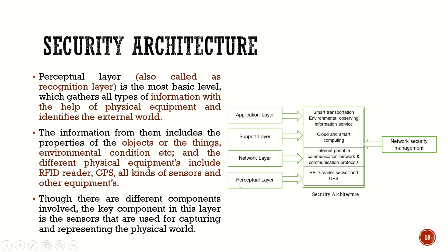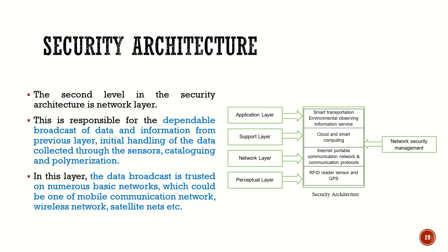The second layer is the network layer, which is equally important. It is directly connected to the broadcast of data collected in the perceptual layer, where sensors get the data, and those data have to be sent to the next layer. In this network layer, the data broadcast is trusted on numerous basic networks — mobile communication networks, wireless networks, satellite networks, Wi-Fi, and so on — providing a dependable broadcast of data from the previous layer.